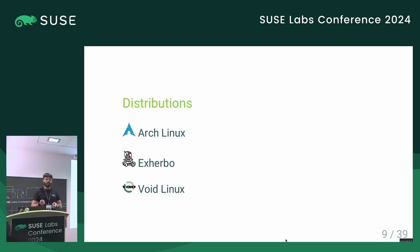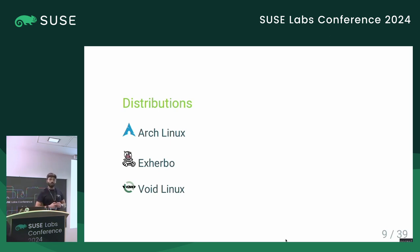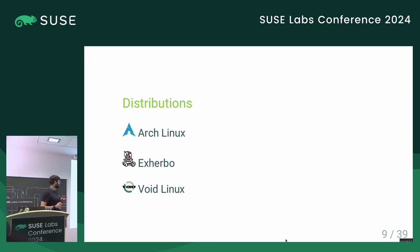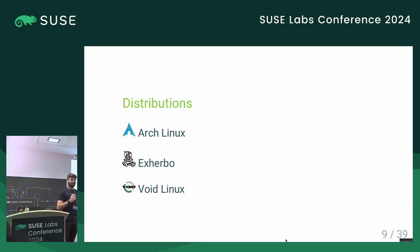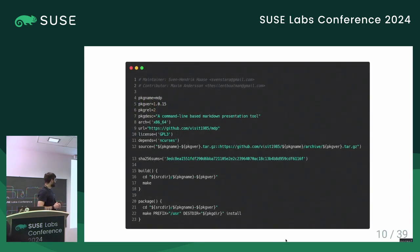The last one is Void Linux. Void Linux is a not-so-common distribution. It ships binary packages and has a similar approach to Arch Linux, but in some ways it is really straightforward and the packaging is streamlined. Let's dive into it.